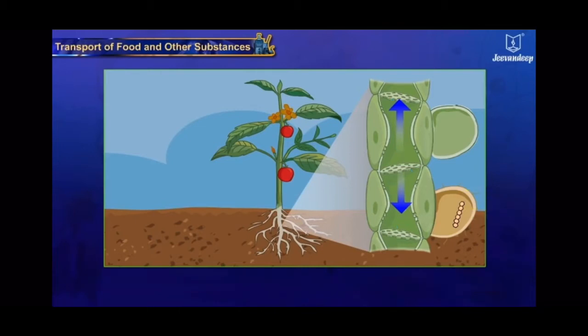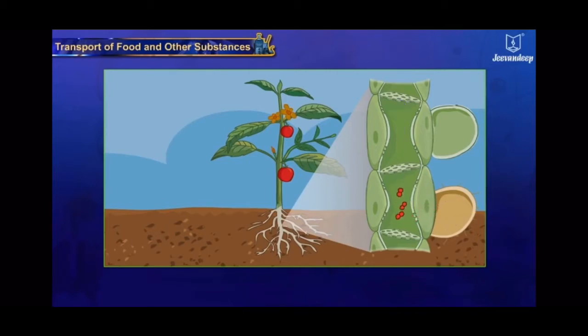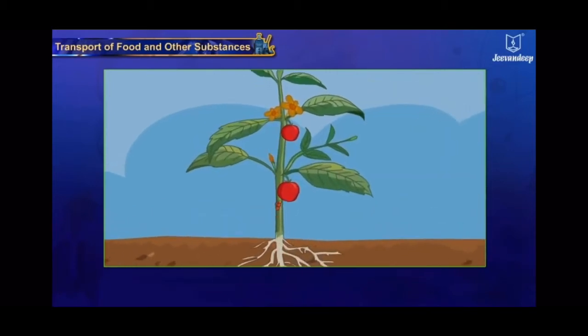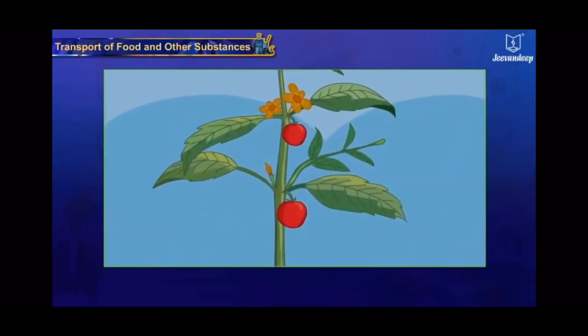In the flowering season, starch, which is an insoluble form stored in the roots or stem, is reconverted into sucrose, which is a soluble form, and is translocated to the buds, assisting in their growth.